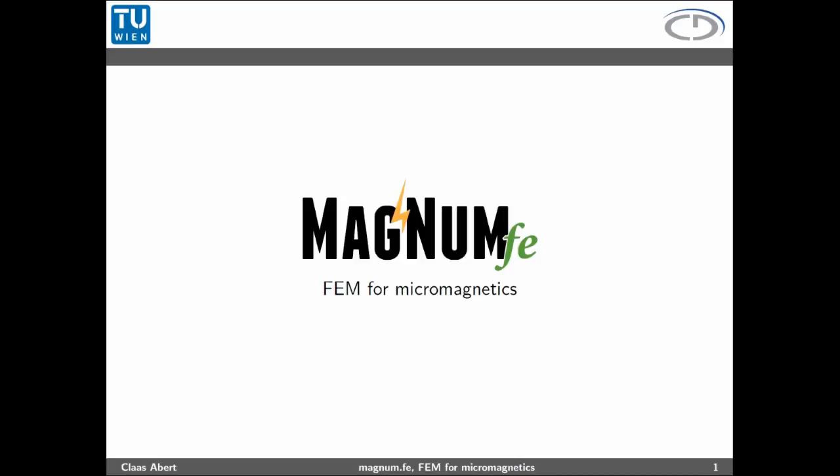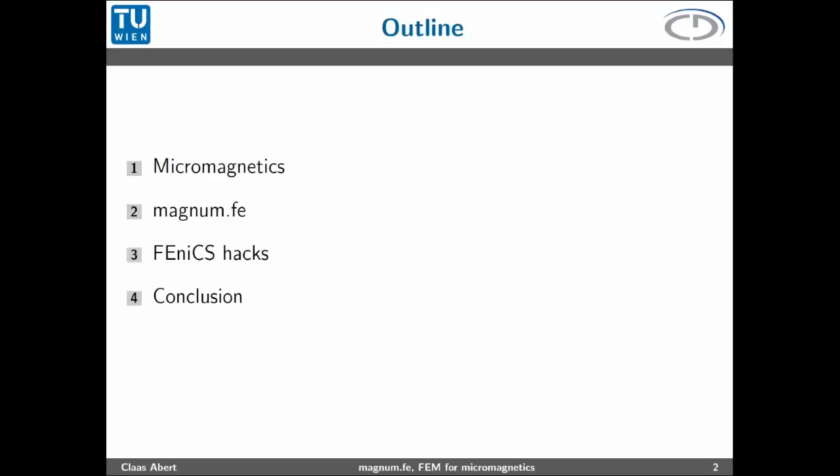This is the outline of my talk. I will start and give you an introduction to the theory of micromagnetics, then focus on some implementation details of Magnum FE. In the last section I will show you some FEniCS hacks which solve small problems in a way that FEniCS didn't mean to be used, and finally I will conclude.